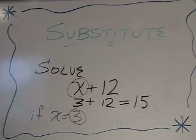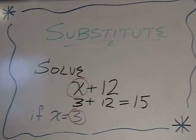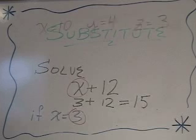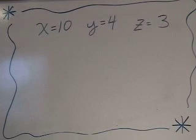Sometimes the problem may look a little more complicated, but we use the same idea of substitution, replacing any letters, any variables, and then we use our order of operations to solve the problem. For example, let's look at a couple of problems. When x equals 10, y equals 4, and z equals 3.